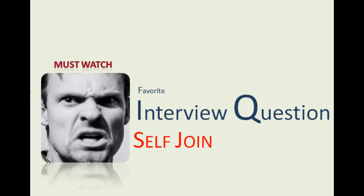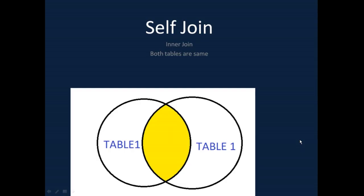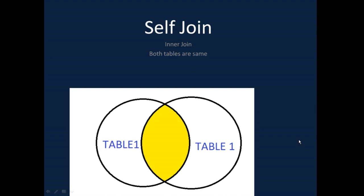A self join is basically an inner join where we consider only the overlap or common records between two tables, but the major difference is that the left and the right table are the same. As you can see in this diagram, both left and right are table one, and the overlap is the same — it's just the inner join of the table with itself.